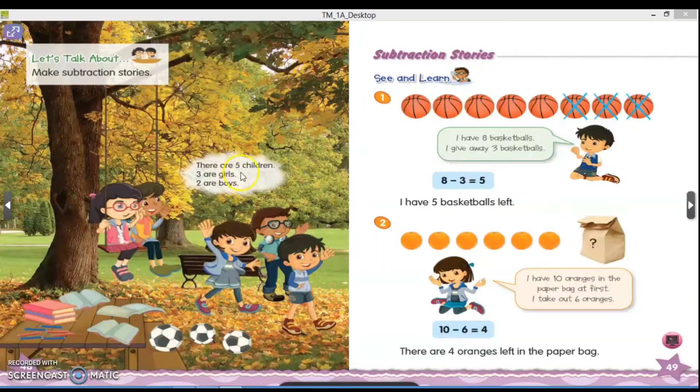Nah teman-teman, jika dikurangi, misalnya, five children, dikurangi dengan tiga perempuan. Jadi, lima dikurangi dengan tiga perempuan, maka hasilnya adalah two. Betul sekali. Jadi, jika lima anak dikurangi tiga anak perempuan, maka akan menghasilkan dua anak laki-laki.